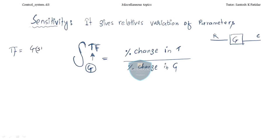For the closed-loop control system, the overall transfer function is comprised of two parameters: the open-loop parameter G(S) and the feedback element H(S). So what will be the change in the transfer function if any one of them changes — variation in G or variation in H? This is nothing but the sensitivity of the system.